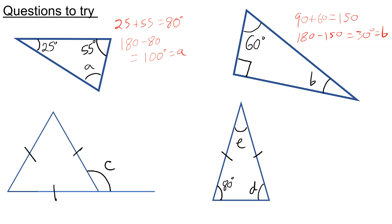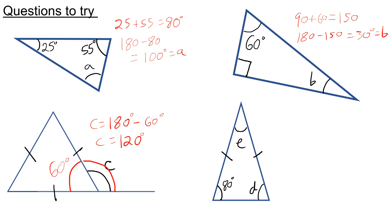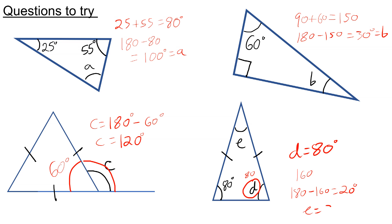We have an equilateral triangle, so all of the angles inside are 60 degrees. To work out C, we notice that it's on a straight line with 60, so we do 180 take away 60, because angles in a straight line add up to 180. So C is 120 degrees. And lastly, we have an isosceles triangle, so D needs to be 80 because the base angles are equal. So 80 plus 80 is 160, take that away from 180, and we get E is 20 degrees.